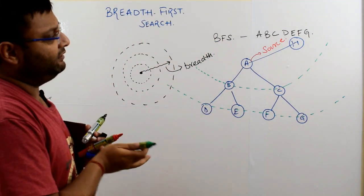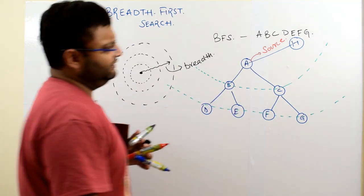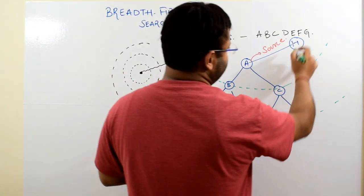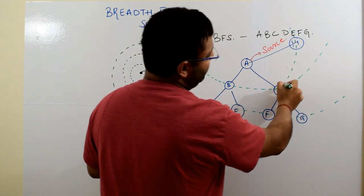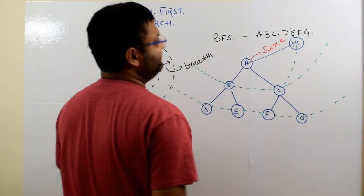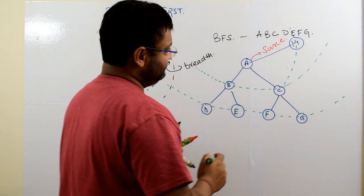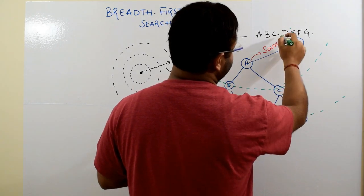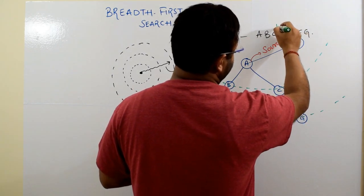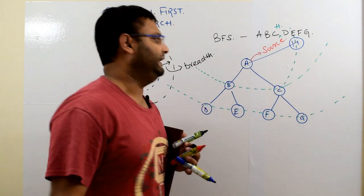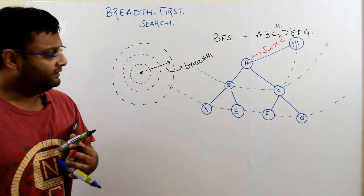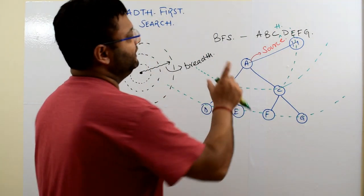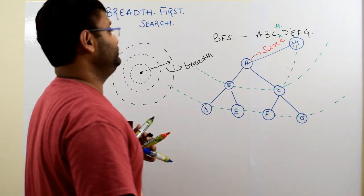What your answer would have been in this case? Yes, you are right. This H will also be part of this green wavefront. So in this case, your answer would have been nothing but A, B, C, and then H. This is your breadth first search.